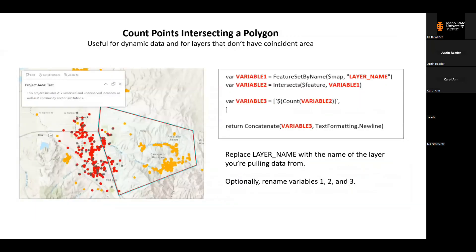The first expression counts the points that intersect a polygon. On the left-hand side you can see the example where this polygon — just a fake project area — sums up the total number of points that fall within it. The red points are locations the FCC has determined are unserved, and the orange points are locations determined to be underserved. Another critical layer for that project is community anchor institutions — points like libraries, schools, and government buildings that should definitely be well served for broadband. Multiple layers are all showing up in the pop-up for the project area polygon layer.